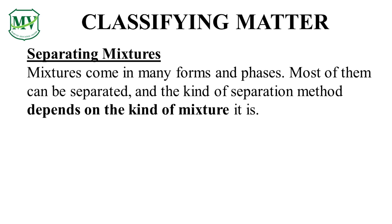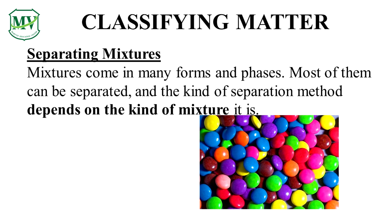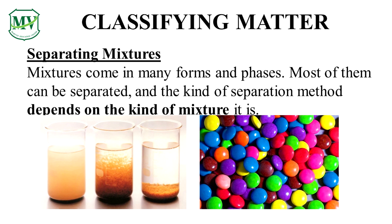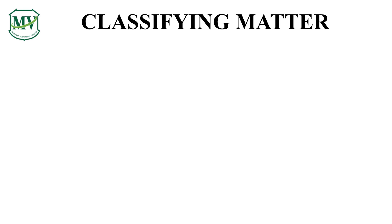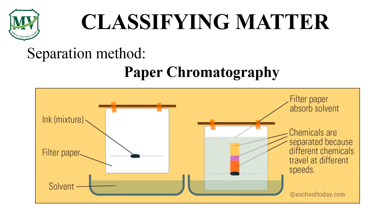Do you remember what a mixture is? It is made up of two or more substances that are either physically or chemically mixed. So how do we separate a mixture? Do you know some techniques and methods in separating mixtures? Let's learn some more. The first technique is paper chromatography. It uses paper strips or sheets as the absorbent stationary phase through which a solution flows.